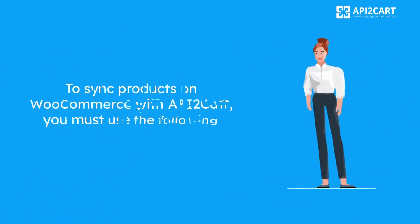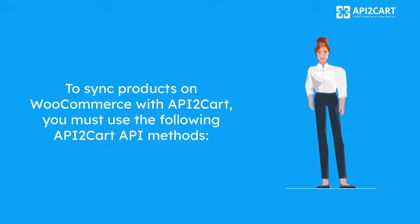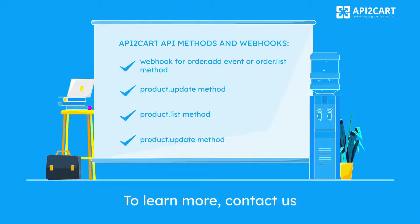For instance, to sync products on WooCommerce with API2Cart, you must use the following API methods: a webhook for the order.add event or the order.list method, and the product.update method. Alternatively, you can use API methods provided by API2Cart such as product.list and product.update.